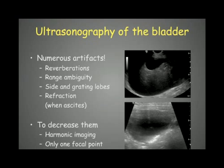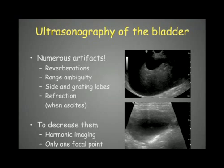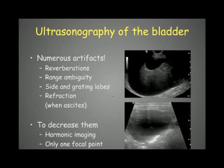We can also have refraction artifacts when there is ascites. When you have ascites or fluid around the bladder plus fluid in the bladder, we can have some refraction that creates a false interruption of the bladder wall. We should not think this is an interruption due to a rupture — it's just an artifact due to refraction.